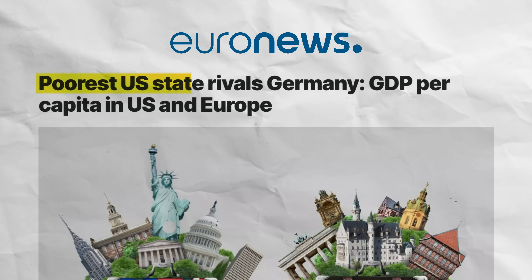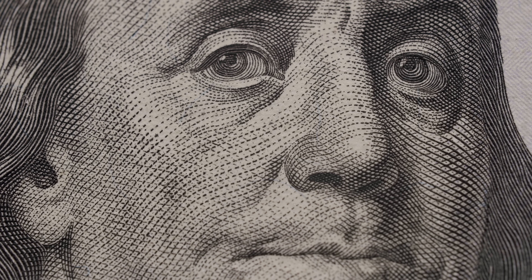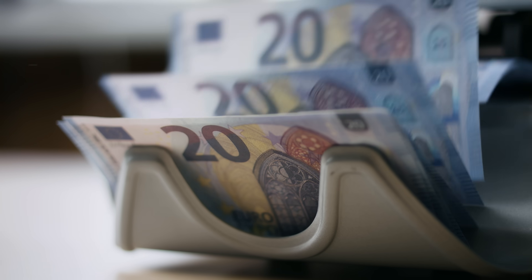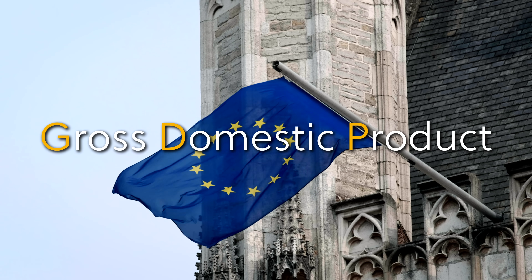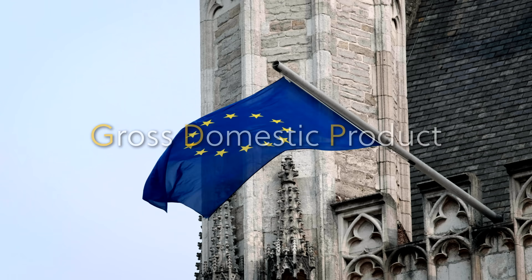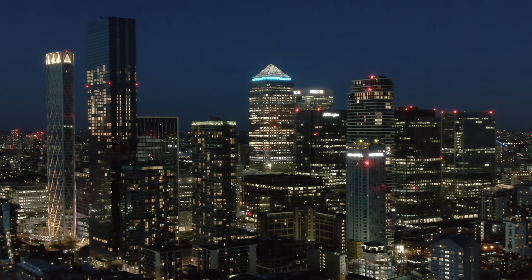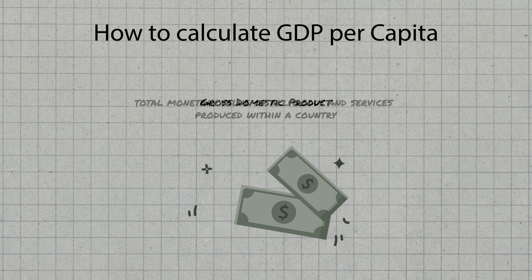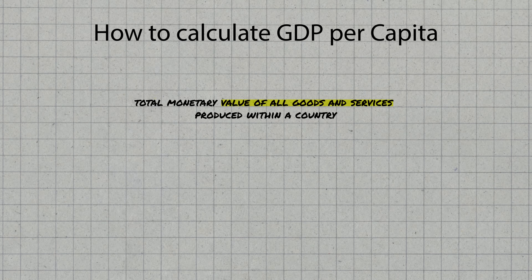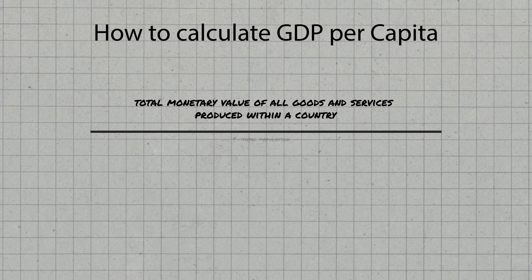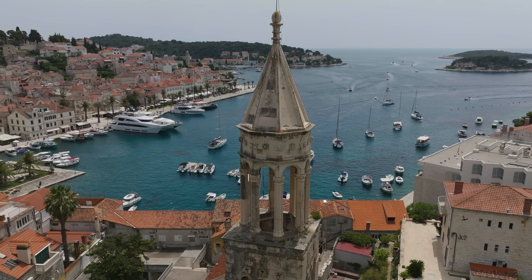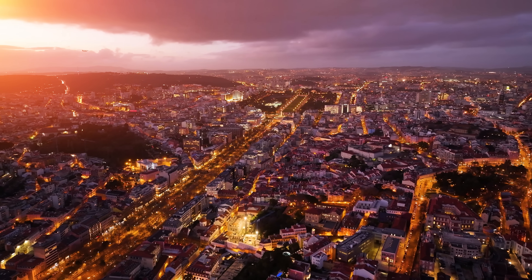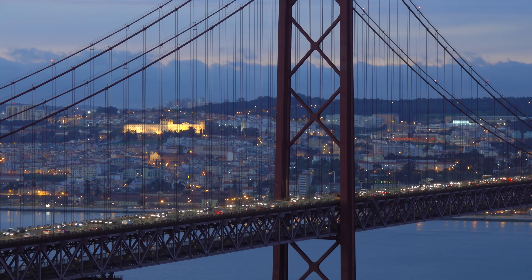Before we can make statements like this headline from Euronews, statisticians and economists must try to solve an important problem: how do we compare the prosperity of two countries with different economies, different standards of living, and different currencies? GDP, or gross domestic product per capita, is overwhelmingly the most universal metric because its components are regularly tracked on a global scale. The basic formula is to divide the gross domestic product — the total monetary value of all goods and services produced within a country during a specific time period, usually a year — by the number of people living in the country during that time.